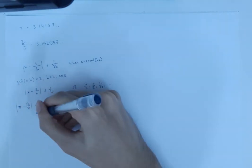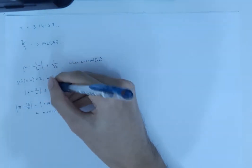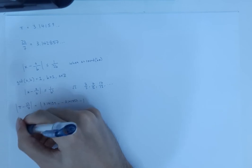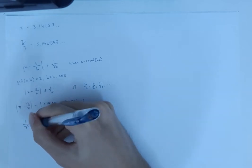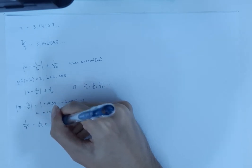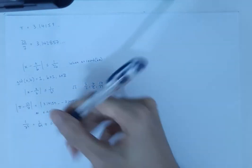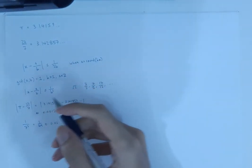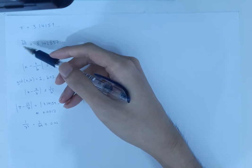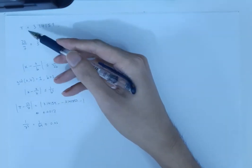So this thing is approximately 0.0012, and clearly this is much smaller than 1 over 2b by a factor of 20. So this is how we can verify that 22 over 7 is indeed a very good rational approximation to pi.